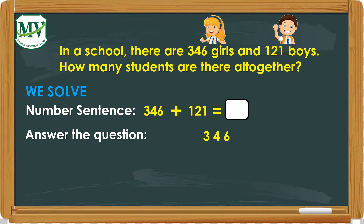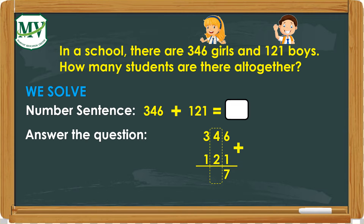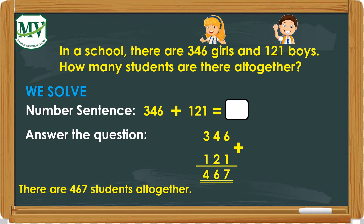Let's do the solution: 346 plus 121. Step 1: Let's add the ones — 6 plus 1 equals 7. Step 2: Let's add the tens — 4 plus 2 equals 6. Step 3: Let's add the hundreds — 3 plus 1 equals 4. Therefore, there are 467 students all together.